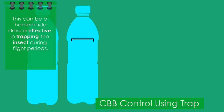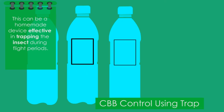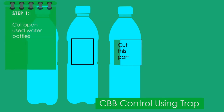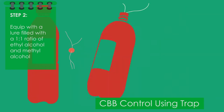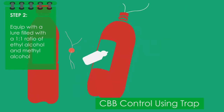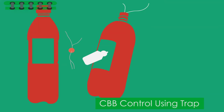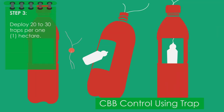Number two: create a CBB trap. This can be a homemade device effective in trapping the insect during flight periods. Cut open used water bottles and equip them with a lure filled with a one-to-one ratio of ethyl alcohol and methyl alcohol. Deploy 20 to 30 traps per one hectare.